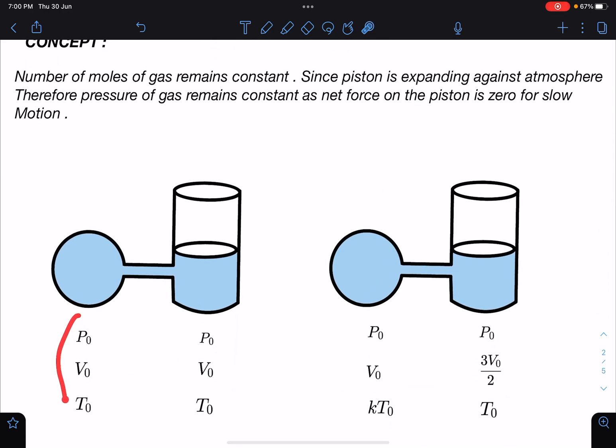So initially pressure, volume, temperature in the left part is P₀, V₀, T₀ and here also it is P₀, V₀, T₀. But finally we know the pressure here is P₀ because of the piston mass, volume becomes 3V₀ by 2.